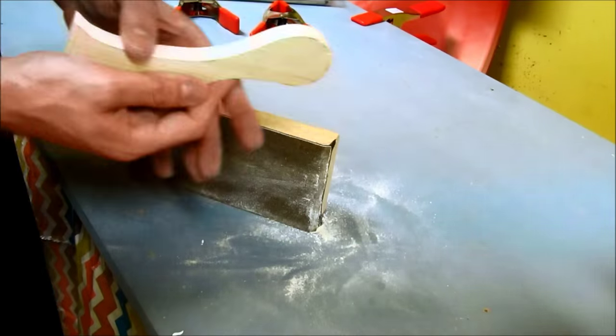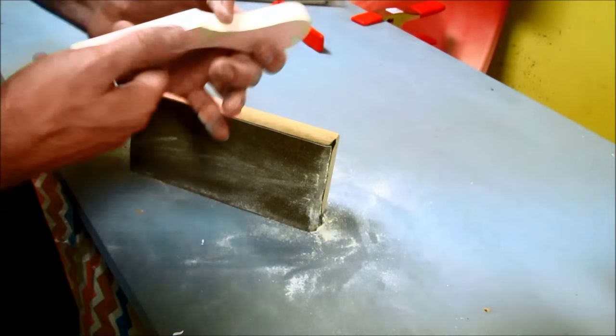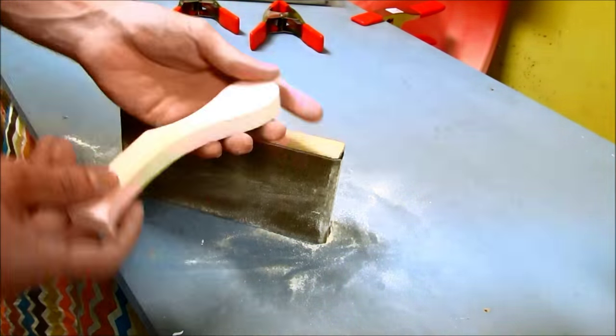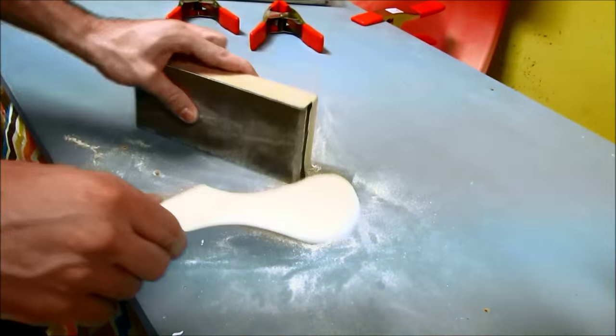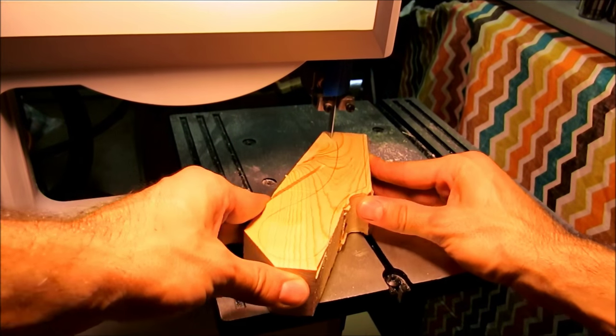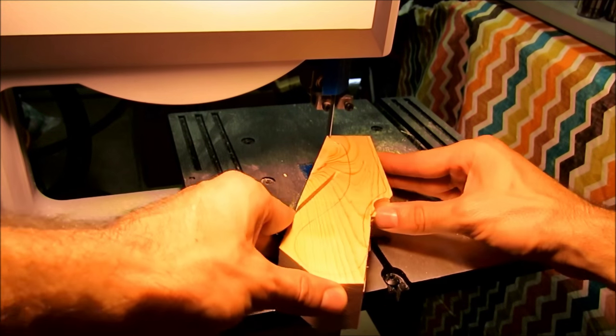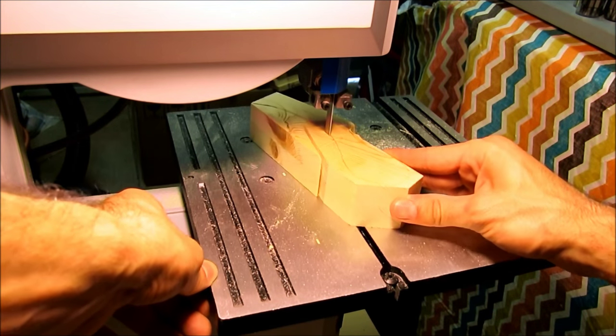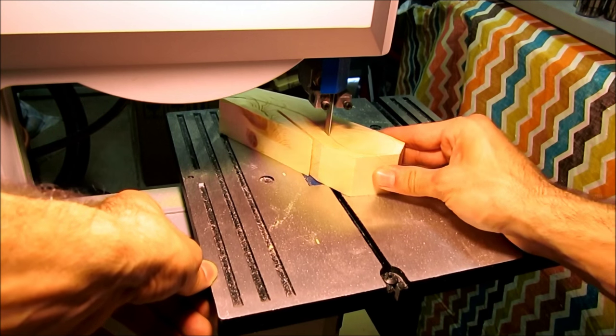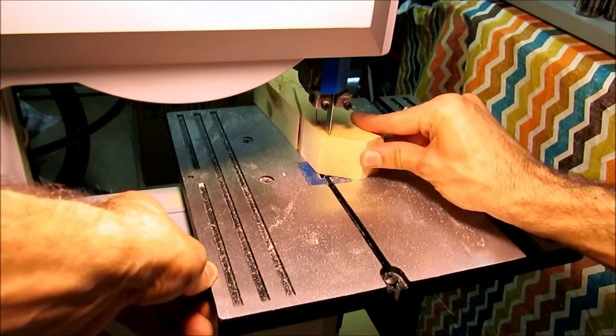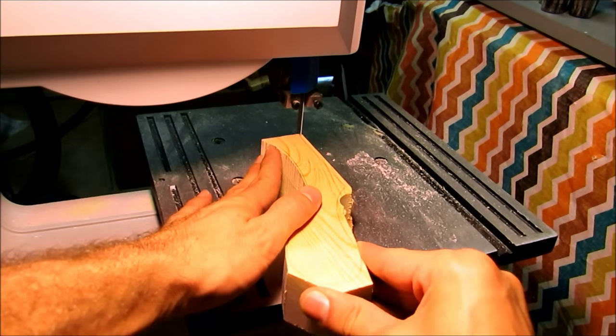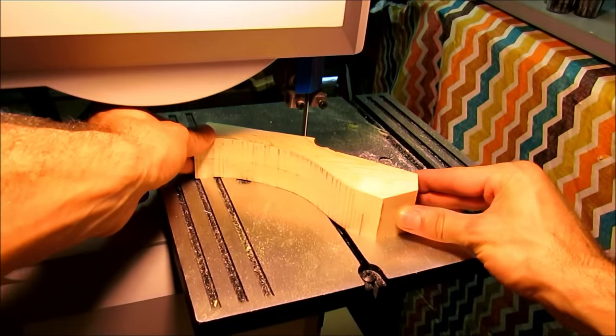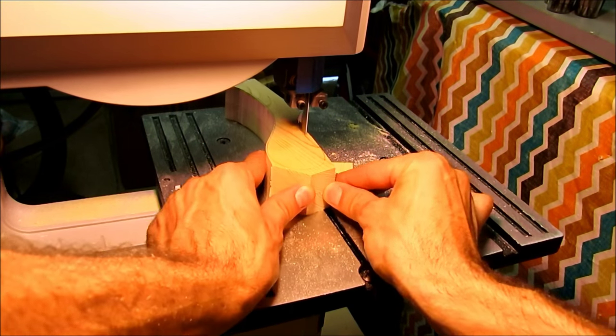Once I did that, I decided that I wanted my pieces to be twice as thick. So what I did is glue two boards together, and then I repeated the process. My final piece is going to be one and a half inches wide.